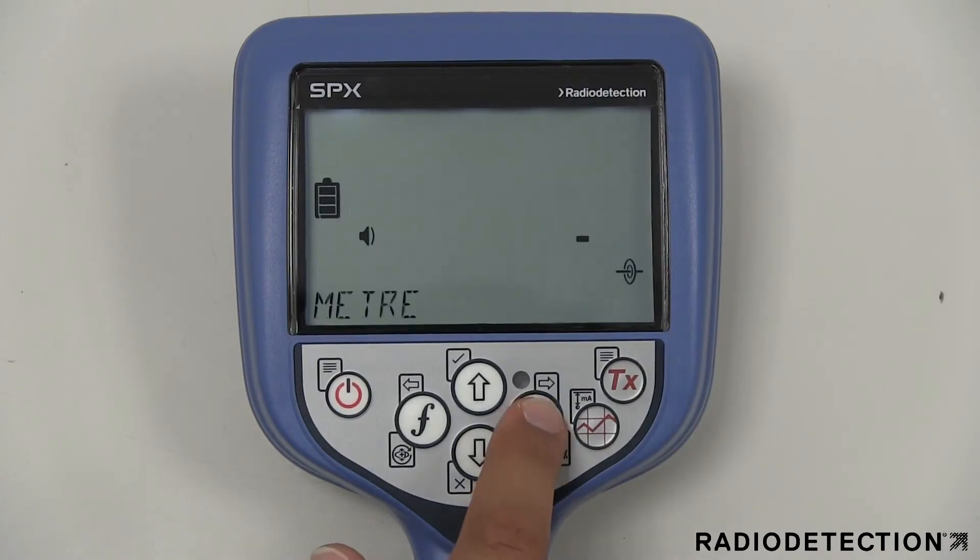The units menu gives you the option of displaying metric or imperial units on the screen.